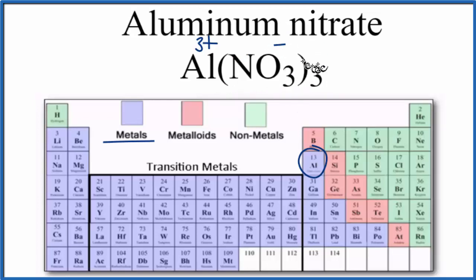So we have three times that 1-, that's 3-, and that balances out the 3+ on the aluminum ion. Because we have this 3+ positive charge that's attracted to these negative charges, that forms the ionic bond in aluminum nitrate.